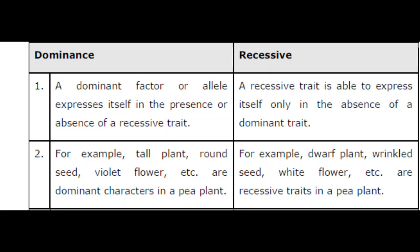There is an important topic: Dominant and Recessive characters. The character which gets expressed in a heterozygous or hybrid form is called the Dominant character. For example, a tall pea plant crossed with a dwarf pea plant — tallness is the dominant character expressed. Dwarfism is not expressed in the hybrid form; that is the recessive character. You can see tall plant, round seed, violet flower as dominant, and dwarf plant, wrinkled seed as recessive.